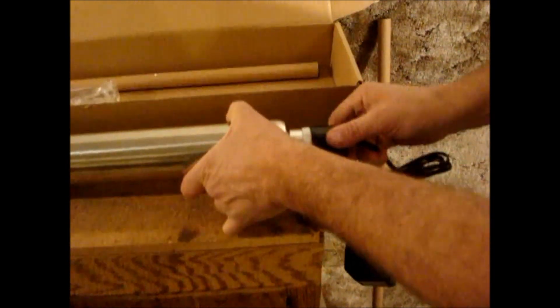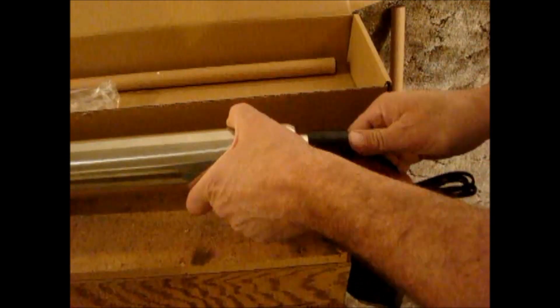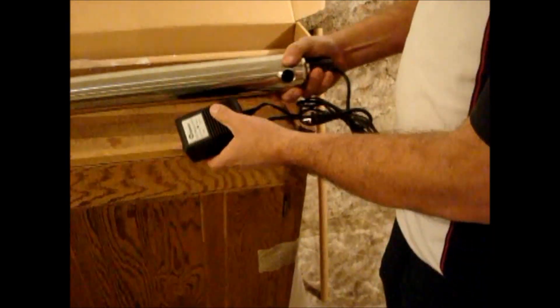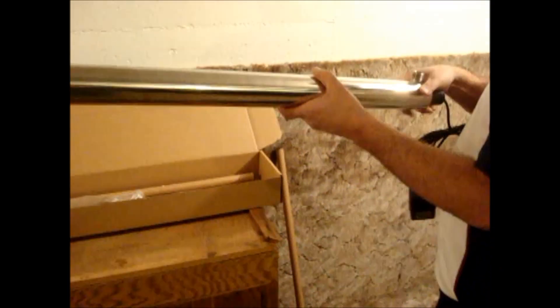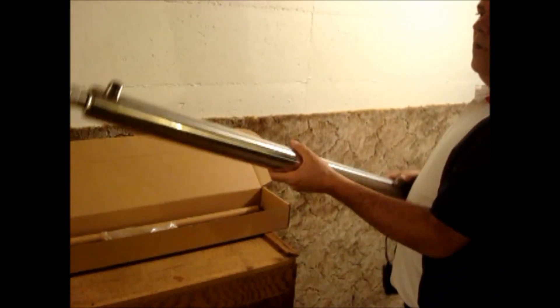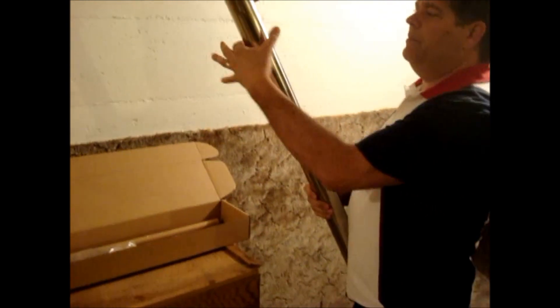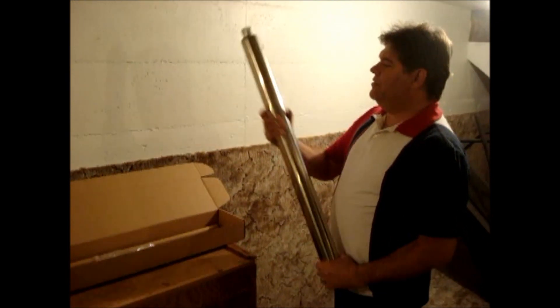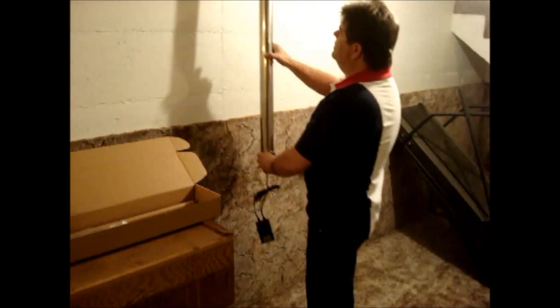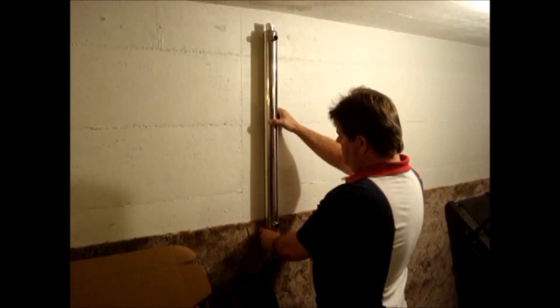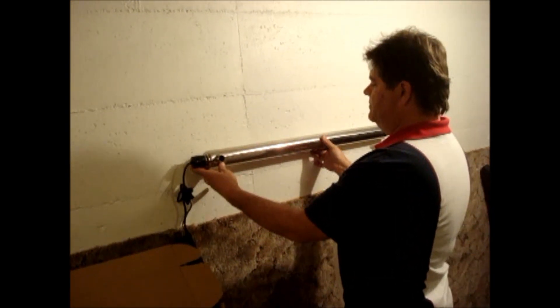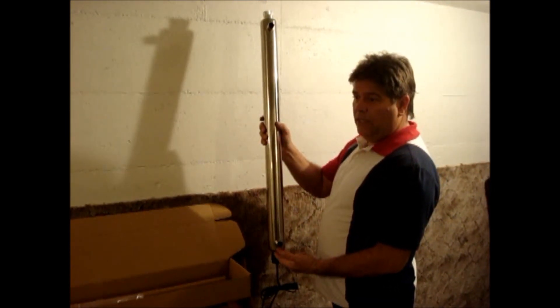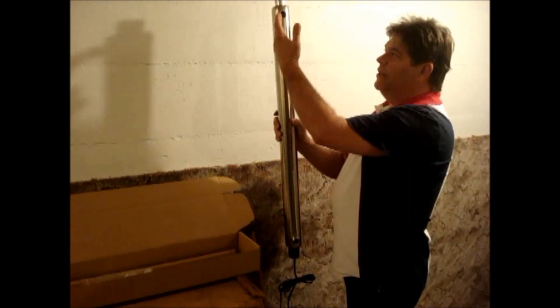Cover with the black cover so the ultraviolet light doesn't come out and harm anybody. And you're ready to mount the unit on the wall. You'll have a pair of clips that will clip around the stainless steel housing. And it can be mounted vertically or horizontally.